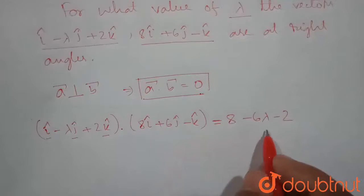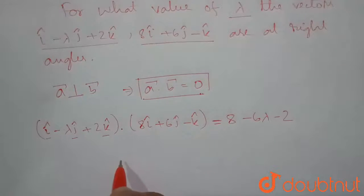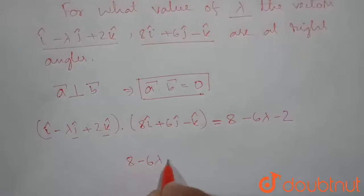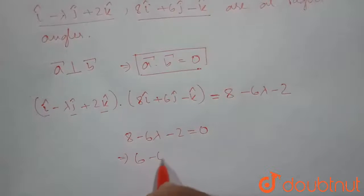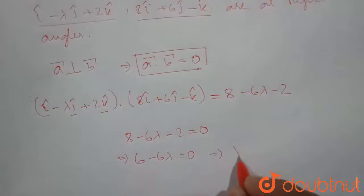So this will equal to 0. So we can write 8 minus 6 lambda minus 2 is equal to 0. So 8 minus 2 will be 6 minus 6 lambda is equal to 0. So from here we get lambda is equal to 1.